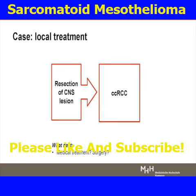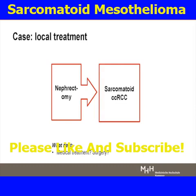We could discuss what to do next — do surgery or medical treatment. We took out the kidney, and it turned out to be sarcomatoid. This shows you that whatever you see in these tumors, it is heterogeneous. Because there are areas of dedifferentiation, and these are the drivers for clinical behavior and aggressiveness.